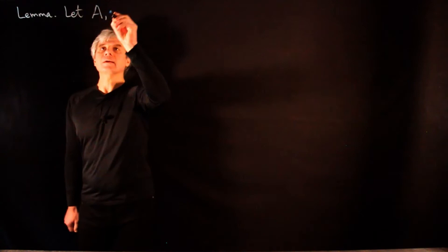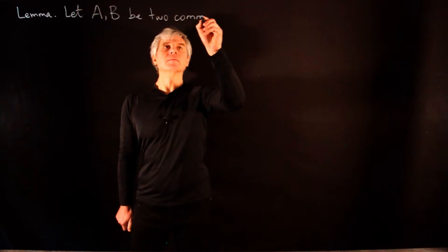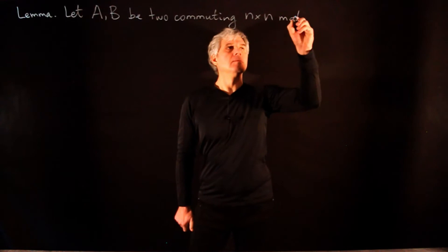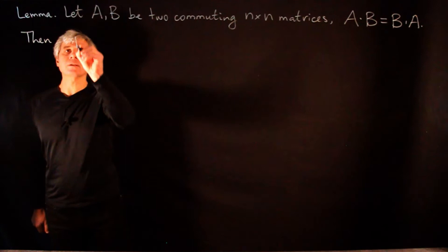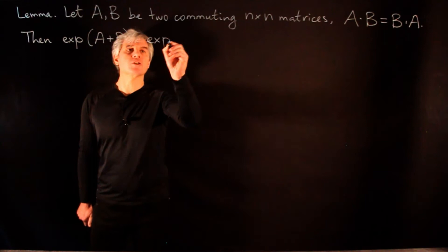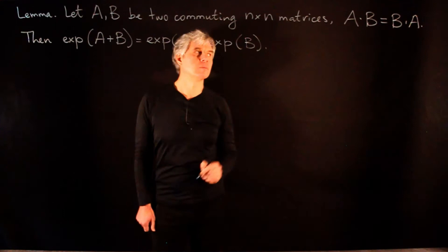Lemma: Let A and B be two commuting n by n matrices — so A times B equals B times A. Then the exponential of A plus B is equal to the exponential of A times the exponential of B.